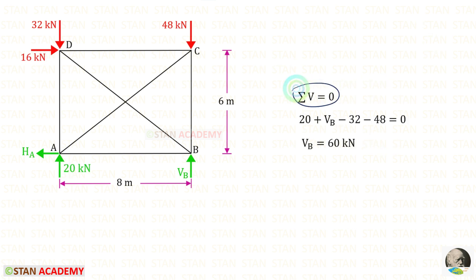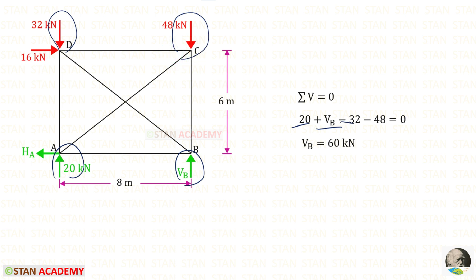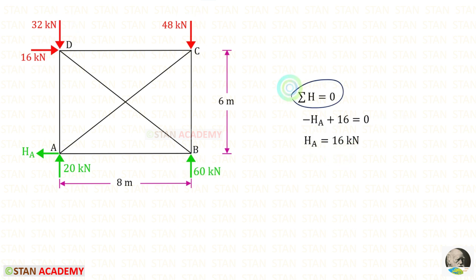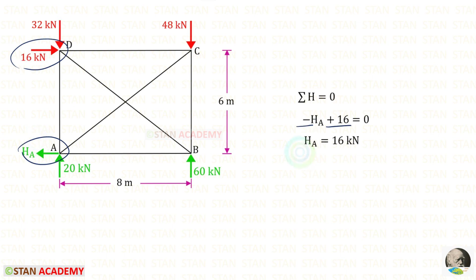Using the same equilibrium rule, the upward reactions are positive and downward loads are negative. For VB, we will get 60 kN. For the horizontal equilibrium, the rightward force is positive and the leftward force is negative. For HA, we will get 16 kN.